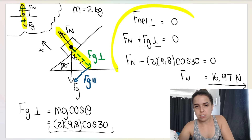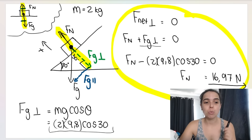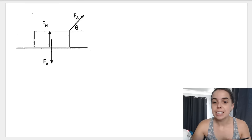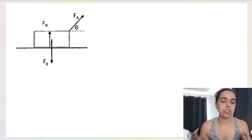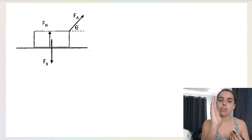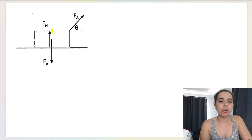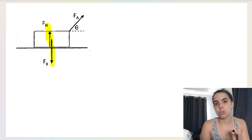You might say: why not just learn that if an object is on a slope, FN equals FG perpendicular? You can use that shortcut in this case, since they have the same magnitude. However, I'm teaching you to do it properly for more complicated situations — like the next example coming up.